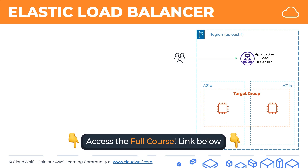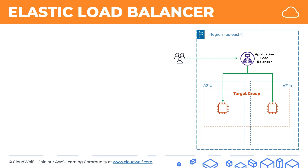What that will do is the application load balancer will distribute this traffic among the instances in the target group. So that means now we can service more people. If, for example, one instance can service 50,000 people, then two instances together can service 100,000 people. And because they're running the same website, people won't know the difference — but in the background the application load balancer is balancing out the load, hence the name application load balancer.